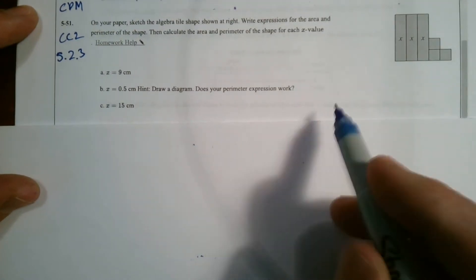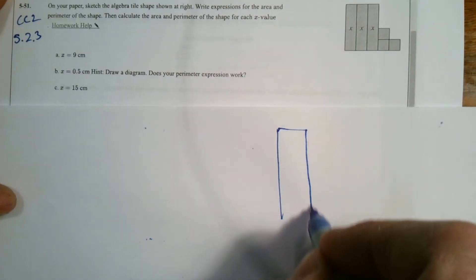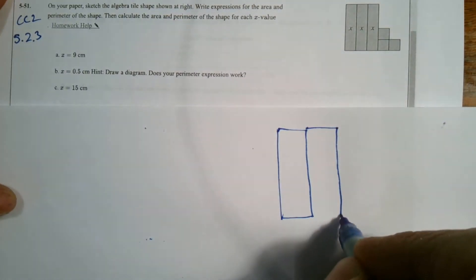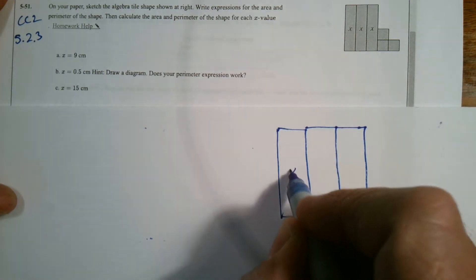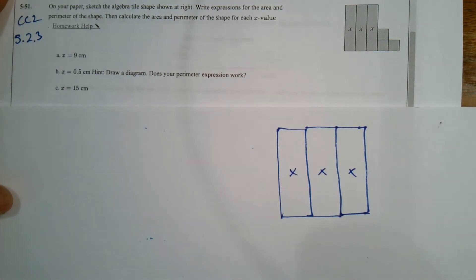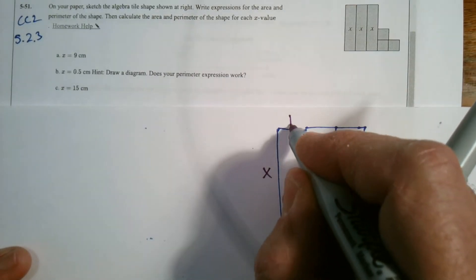So first of all, let's sketch this so we can see what we're doing. I'm going to resketch it so I can make it bigger and write all over it. So we have three of these. And what are these called? There are little X's in them. So what does that tell me? Those are the X tiles, right? An X tile basically means you have a distance of X on one side and a one on the other.